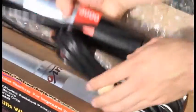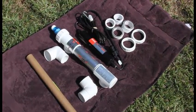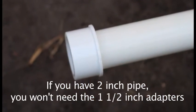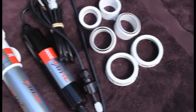All the plumbing fittings are included for the 1.5 and 2 inch pipe. If your current plumbing is 2 inches, you will not need to use the 1.5 inch adapters. All the rest of the fittings will be used for the installation.